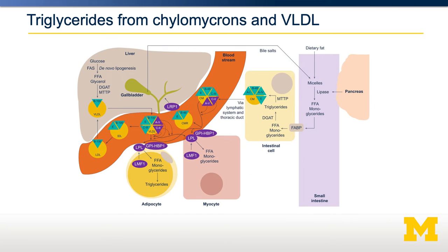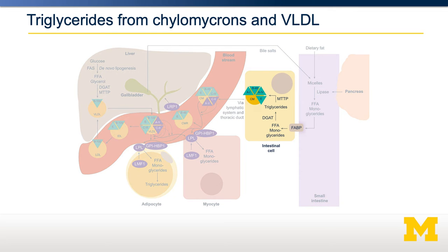Shown here is a schematic showing both chylomicron and VLDL processes. Chylomicrons are generated in the intestinal cell and require specific apolipoproteins, including ApoB48. They then deliver the lipids — the triglycerides and cholesterol esters — to peripheral tissues, mostly muscle cells and adipocytes. Once the chylomicron has been depleted, the chylomicron remnant is then absorbed within the liver, allowing for the recycling of the apolipoproteins and the phospholipids.